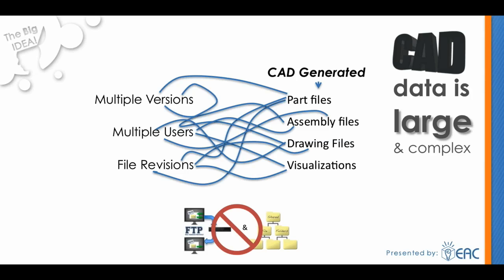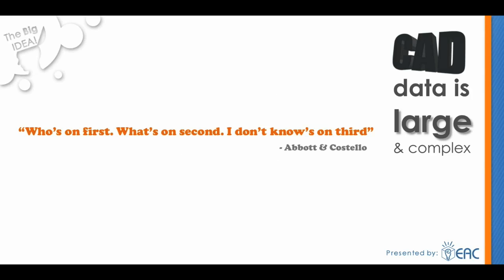Plain and simple, FTP sites and shared folder structures were not designed to manage these relationships. In a workgroup environment, engineers need to divvy their work and collaborate. FTP sites and shared folders do not keep track of who has what version of a file. This means if you're using these tools to manage your data, you're consistently risking that revisions won't be captured, time will be wasted, and the wrong product will go to production.